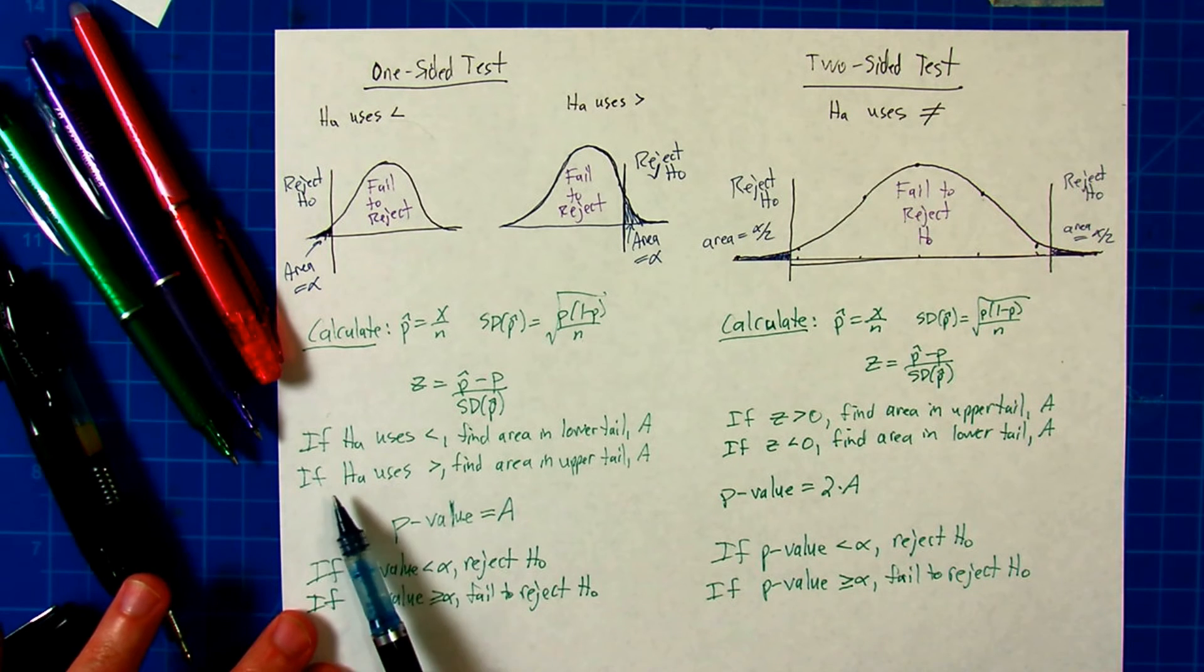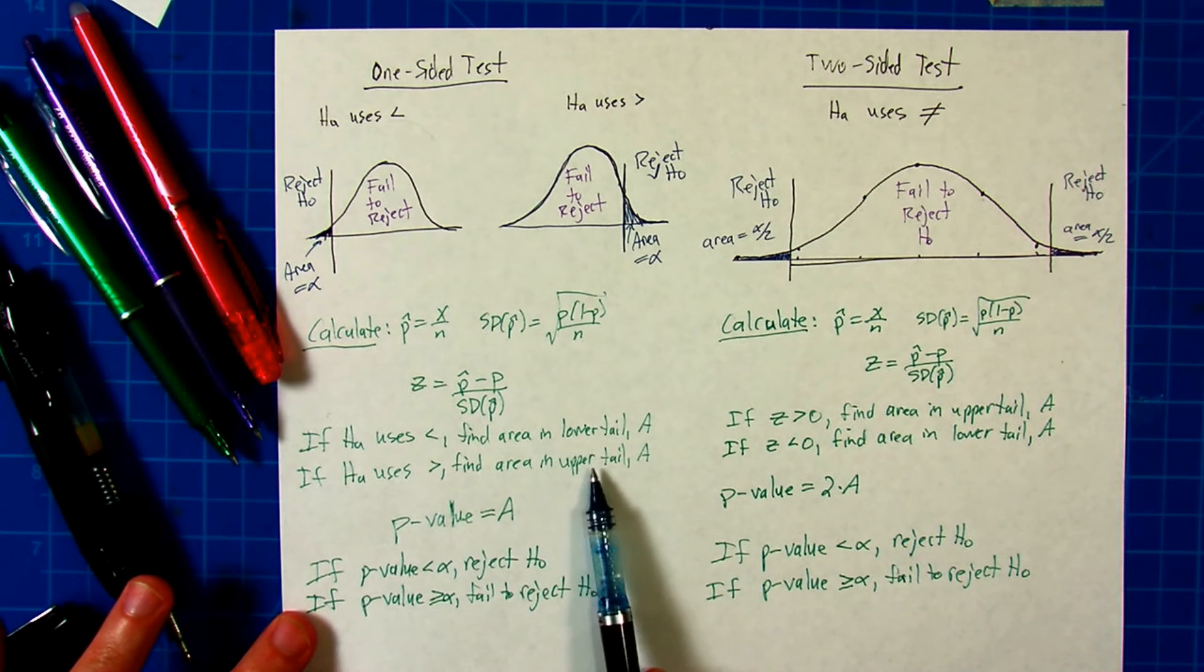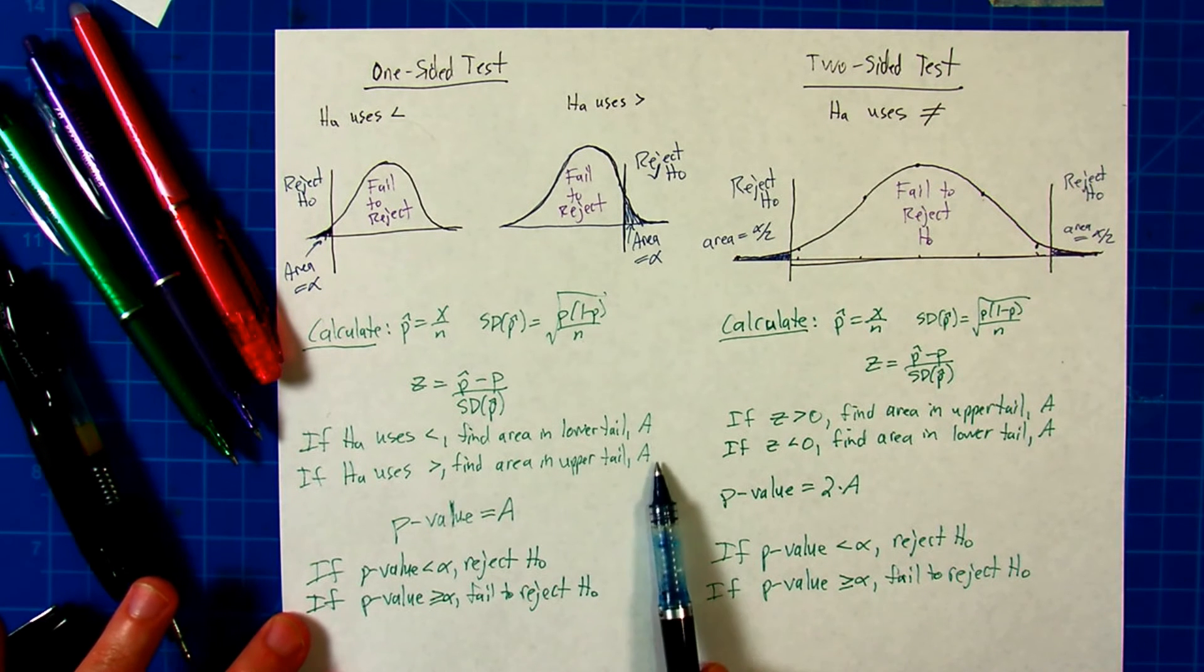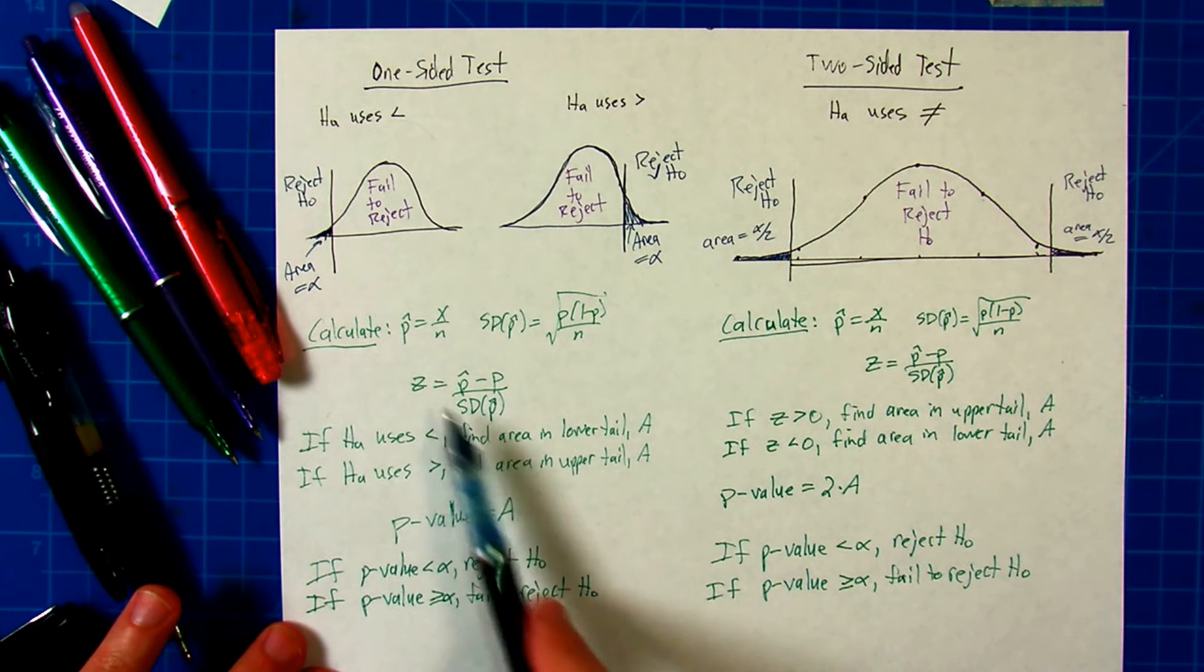Similarly, if the alternate hypothesis uses greater than, find the area greater than that z-value in the upper tail. Either way, we're calling the area A. The p-value in a one-sided test is just equal to that area, either less than or greater than your calculated z-score.